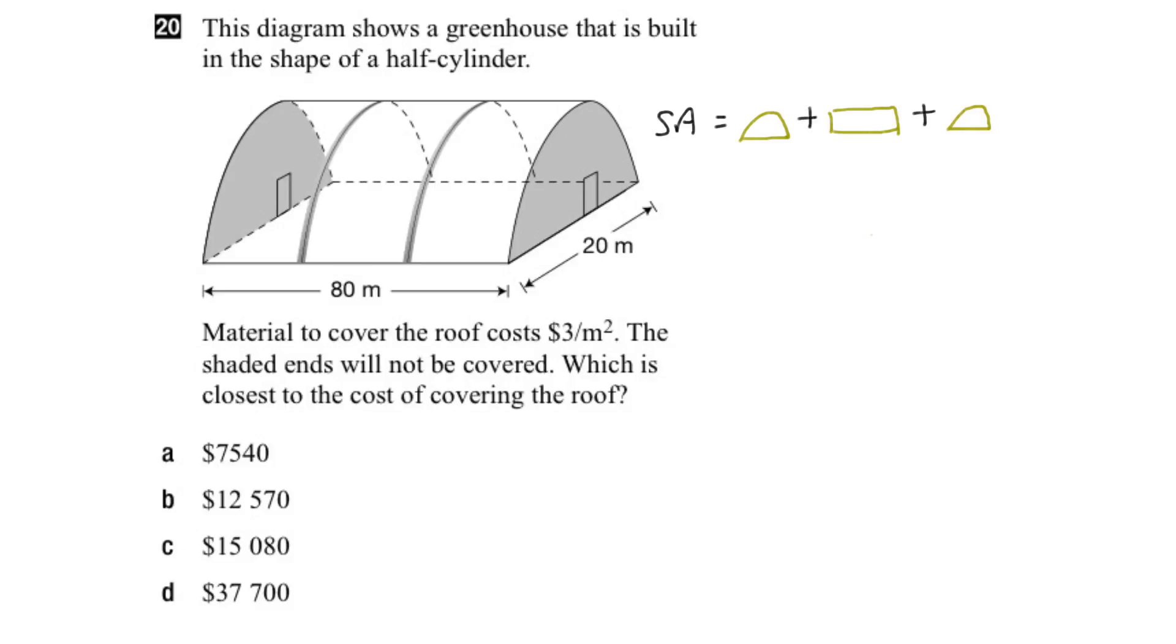Now we're told that the shaded ends will not be covered. And they are the semi-half circles at each end. Therefore, we can eliminate those from our area of the roof. So the surface area of the roof is really just equal to the rectangle.